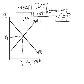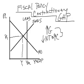So Keynes felt that if we increased government spending and/or we decreased net taxes, which would hopefully increase consumption, government spending and consumption are both components of aggregate demand, and the aggregate demand curve would shift to the right.